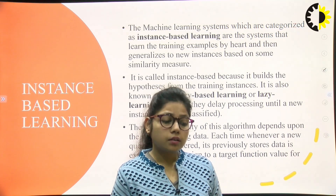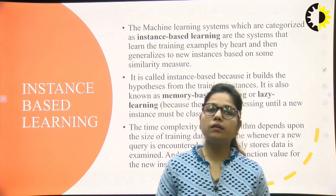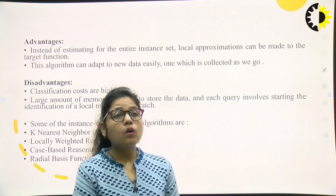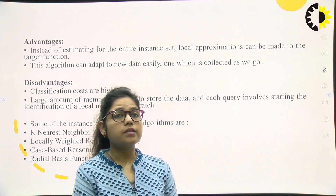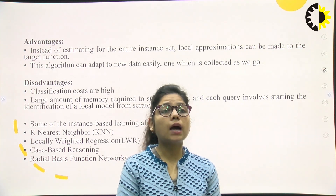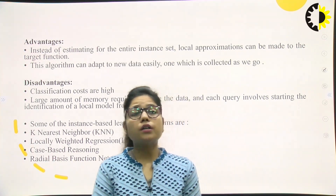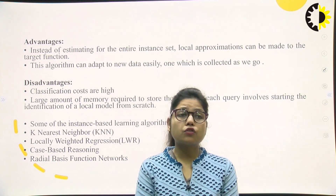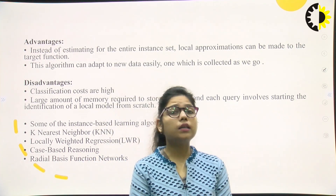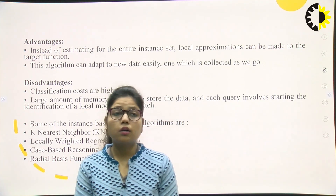Lazy learners learn slowly because they are lazy, that's why they are called lazy learners. The advantages of lazy learners: instead of estimating for the entire instance set, local approximations can be made to the target function. This algorithm can adapt to new data easily, data which is collected as we go. The disadvantages of instance-based learning are: classification costs are high, large amount of memory required to store the data, and each query involves starting the identification of a local model from scratch.